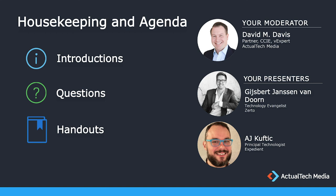I also want to call your attention to the handouts tab in GoToWebinar. There are four different handouts: a case study, information on the Expedient Enterprise Cloud, a solution brief on how to ensure IT resilience at the push of a button with Expedient, and a Zerto infographic on Disaster Recovery as a Service. Go ahead and download those now — you won't be able to download them after the event.